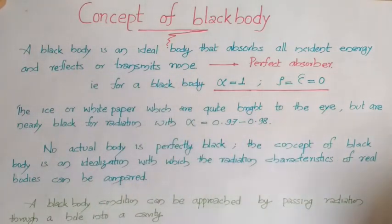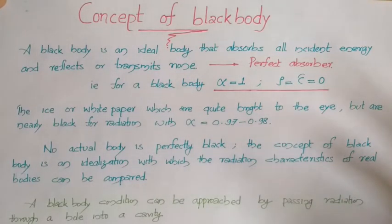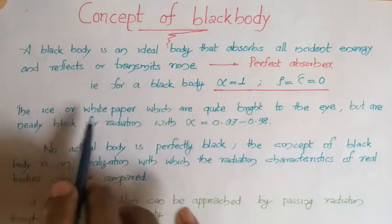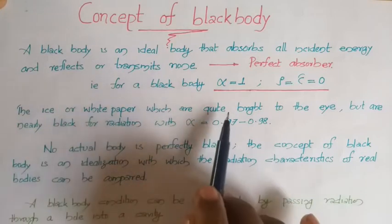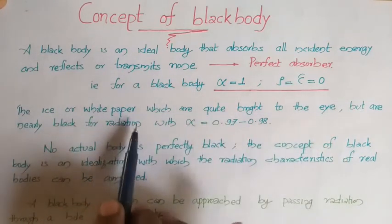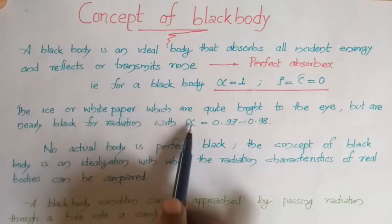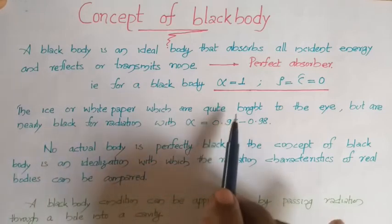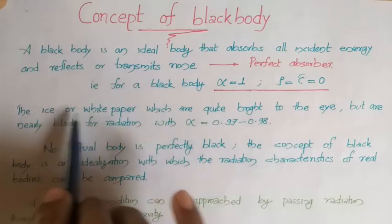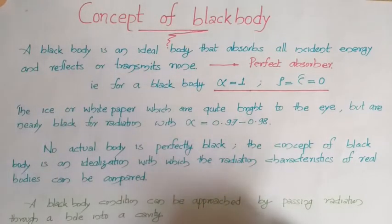There can be cases where bodies appearing bright or white may be black for radiation purposes. For example, ivory white paper which appears quite bright to the eye is actually black for radiation purposes because it has absorptivity approximately near to 1, around 0.97 to 0.98. So you can consider ivory white paper as a black body.